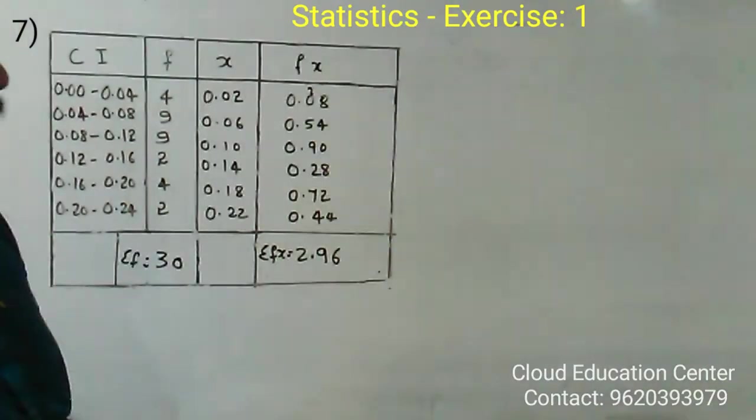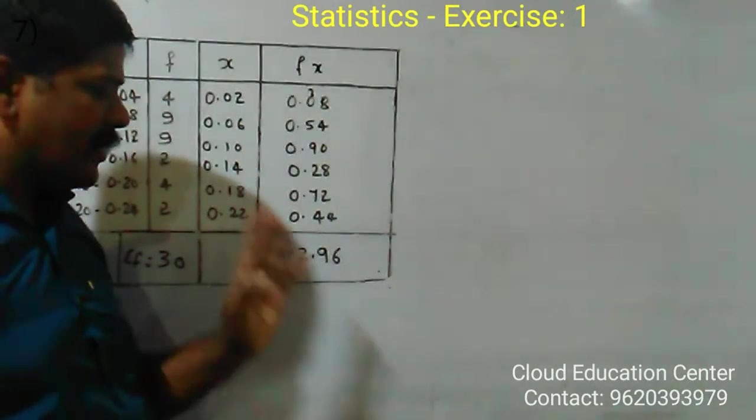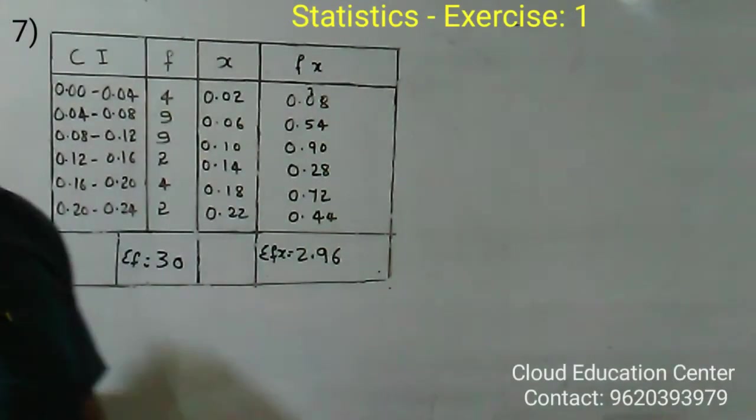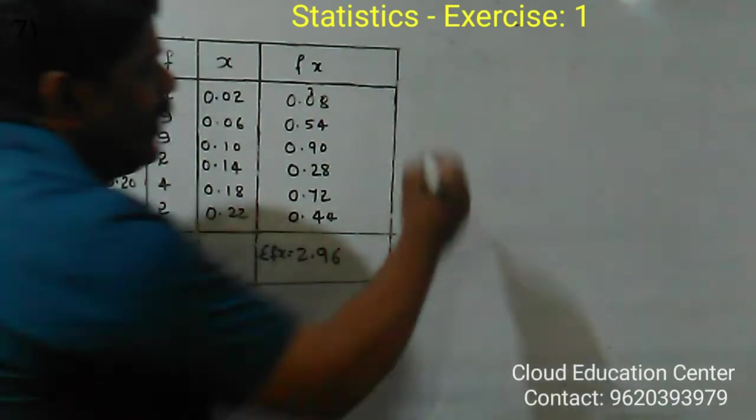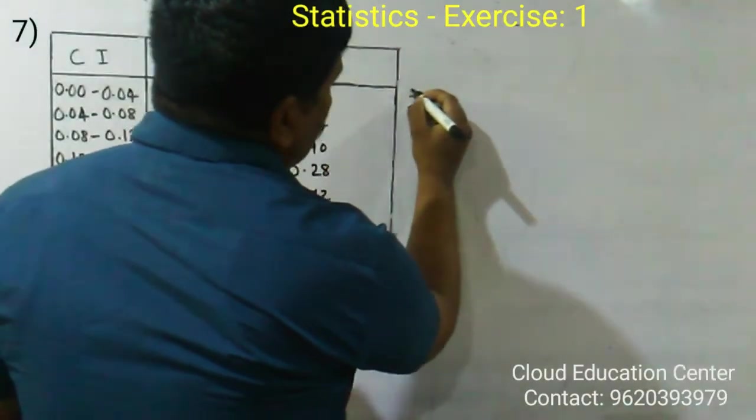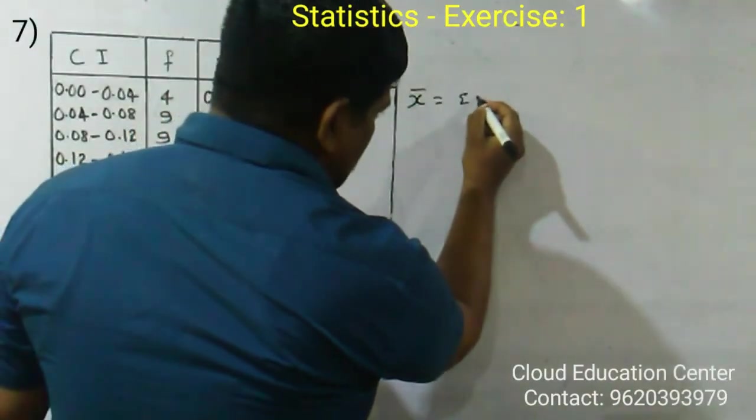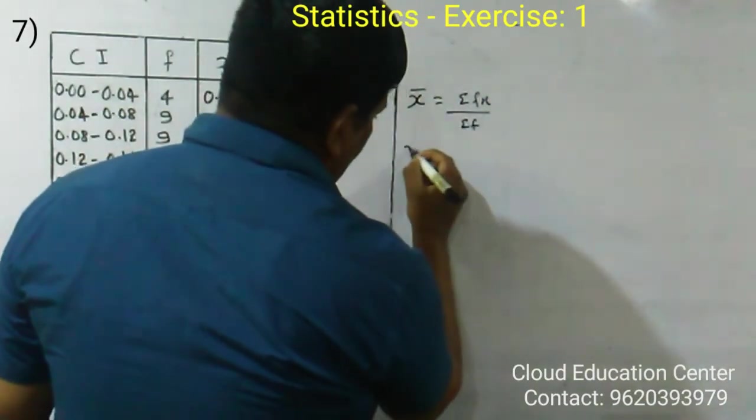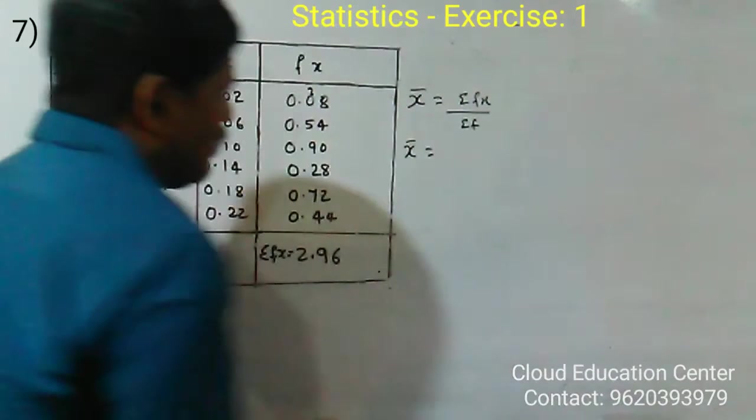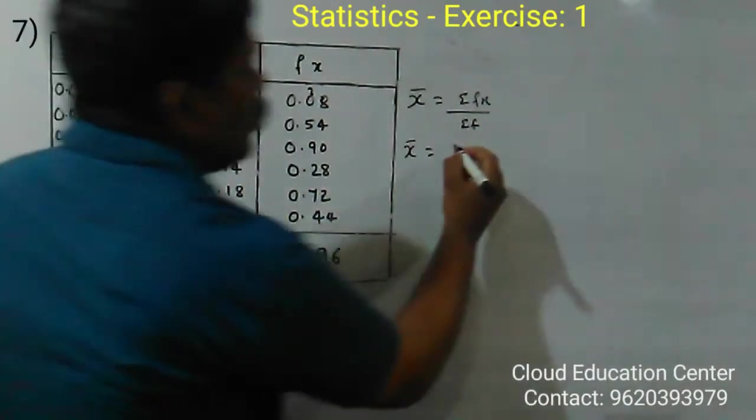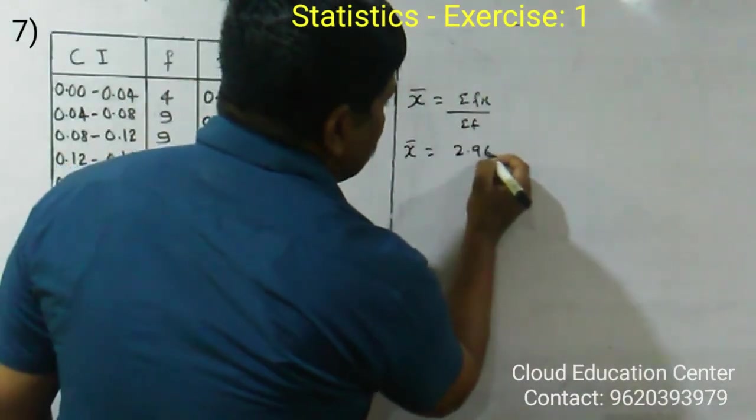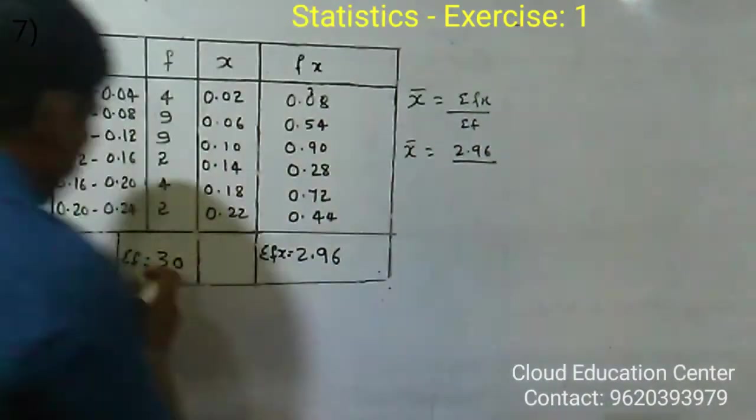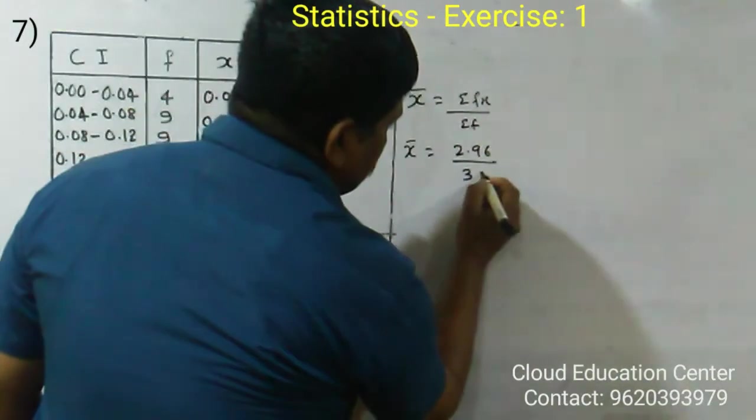We got the FX values and added them to get 2.96. Next, we will find the mean. X bar equals sigma FX divided by sigma F. The mean equals 2.96 divided by 30.